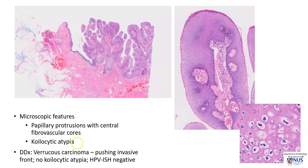One of the differential diagnoses is verrucous carcinoma, which is a type of squamous cell carcinoma with an invasive, pushing, broad front. Verrucous carcinoma will not exhibit koilocytic atypia, and the HPV in-situ hybridization test will be negative.